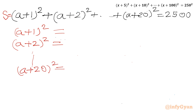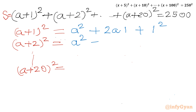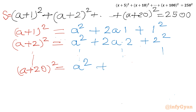Expanding each bracket: (a+k)² = a² + 2ak + k². So expanding all terms from k=1 to 20, the last bracket gives a² + 2a×20 + 20².